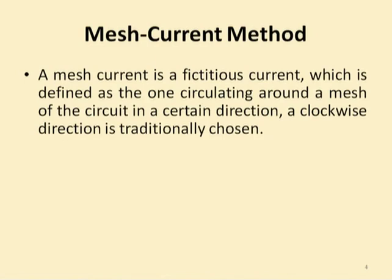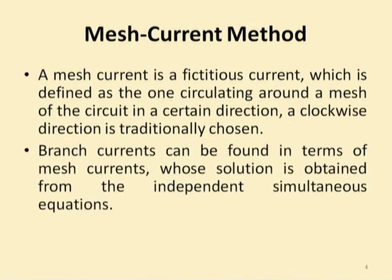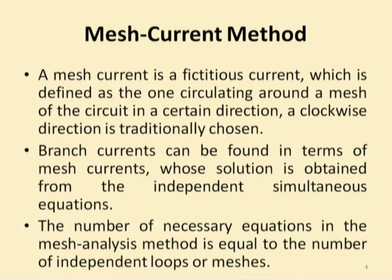A mesh current is a fictitious current defined as one circulating around the mesh of a circuit in a certain direction. A clockwise direction is traditionally chosen. Branch currents can be found in terms of mesh currents, whose solution is obtained from independent simultaneous equations. The number of necessary equations in mesh analysis is equal to the number of independent loops or meshes — the same principle as in node voltage analysis.